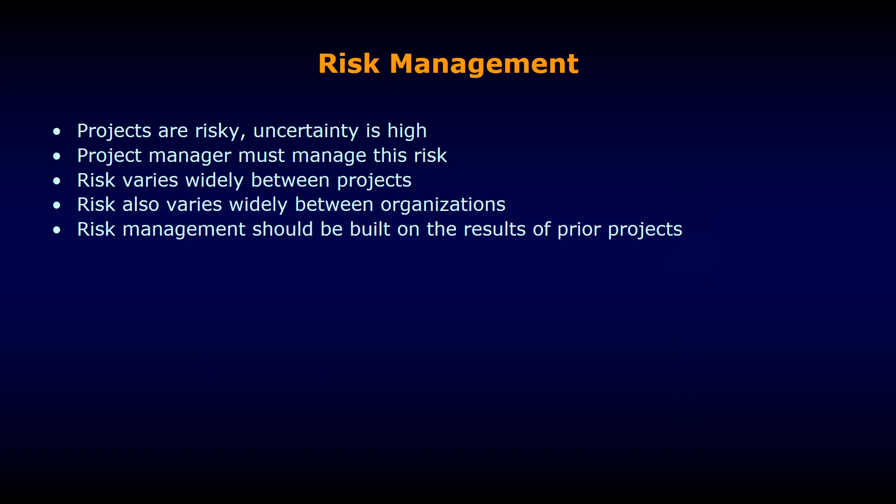Now we are discussing the Risk part of this chapter. All projects are risky — uncertainty is high. Risk is basically the chance of occurrence of an unfavorable event. Project managers must manage this risk. Risk varies widely between projects depending on whether it is a simple or complex project, and also between types of organizations — services, merchandising, or manufacturing. Risk is usually built on the results of prior projects, so project managers can plan for risk factors based on knowledge and experience from previous projects.